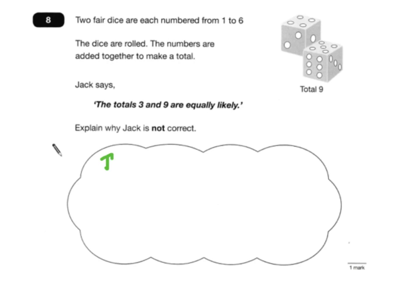Okay, hopefully this is quite obvious to you. You've got two fair dice, so two cubes, and they're numbered one to six. Numbers are added together to make a total, and Jack says the totals three and nine are equally likely.